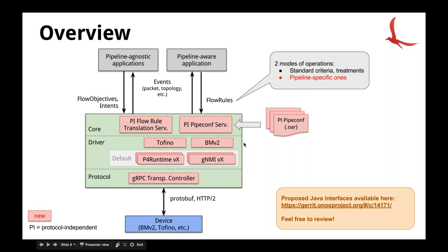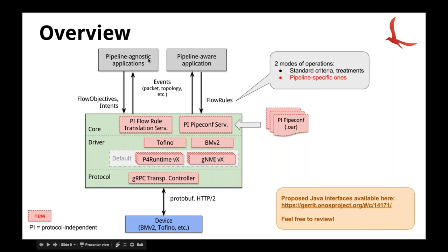On the right are 'pipe confs' — ONOS applications that pack together all information necessary to understand and control a P4 program. The pipe conf contains the pipeline model, the target binaries to actually program a device (for BMV2, Tofino, or other targets), and all the mappings and code to translate ONOS entities to P4-program-specific entities. A pipe conf service in the core will manage these pipe confs, associating a pipe conf to a device, along with a flow rule translation service.